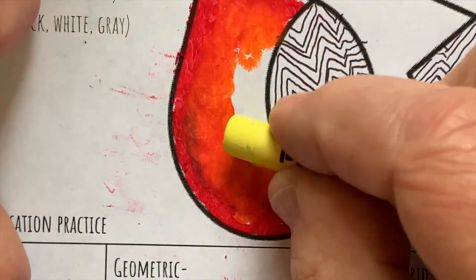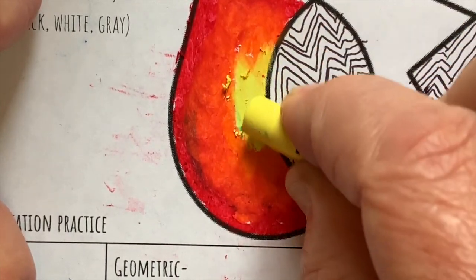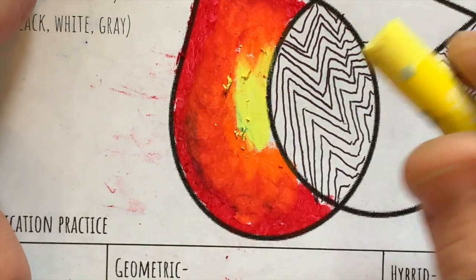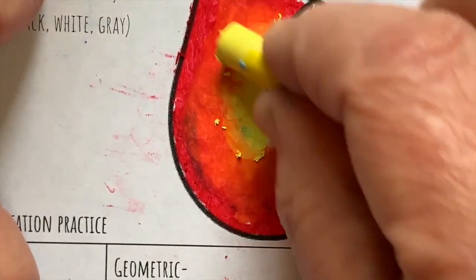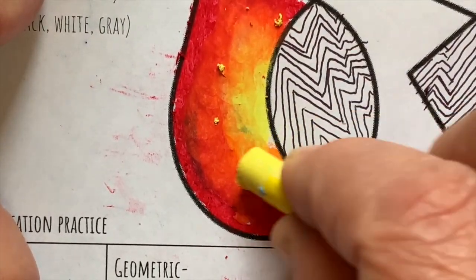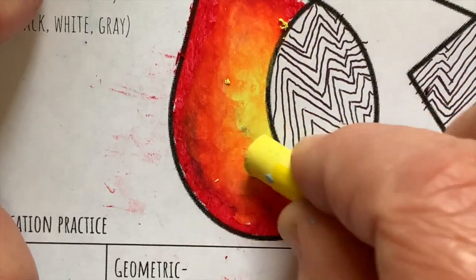As I move into the yellow, again I want to avoid that sharp line showing the change from yellow to orange and I do that by using a light pressure and overlapping with the yellow oil pastel into the orange region. This creates a yellow orange and that line disappears.